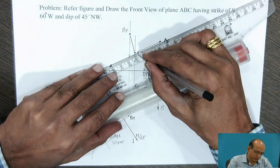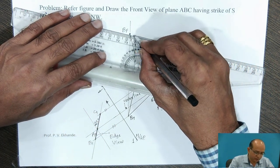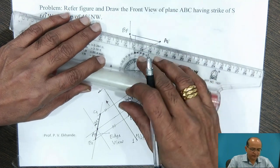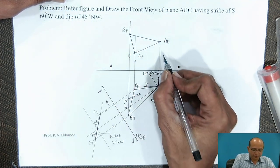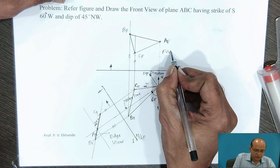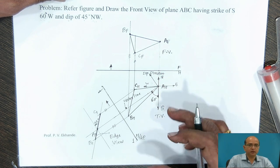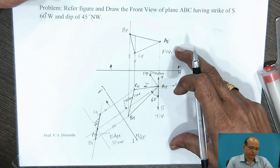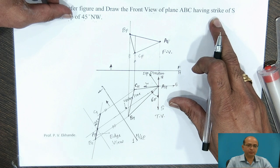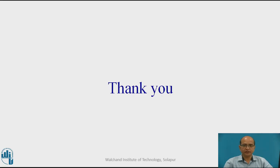We connect these three points to complete the front view of the plane. This triangle represents the front view, and the given figure was the top view. This completes the projections of the plane when the strike and the dip of the plane is given. Thank you.